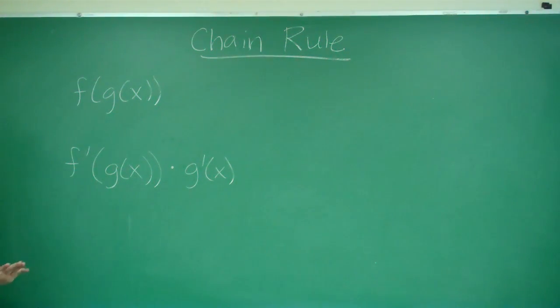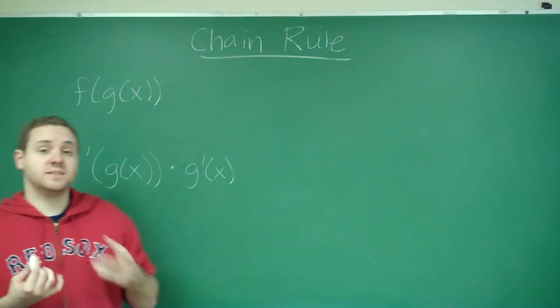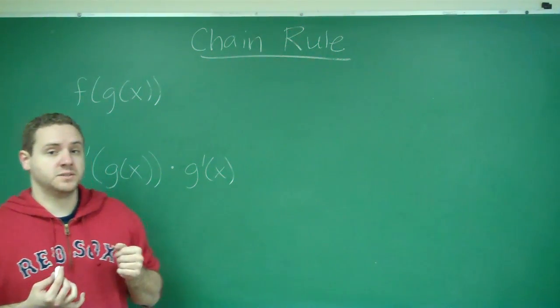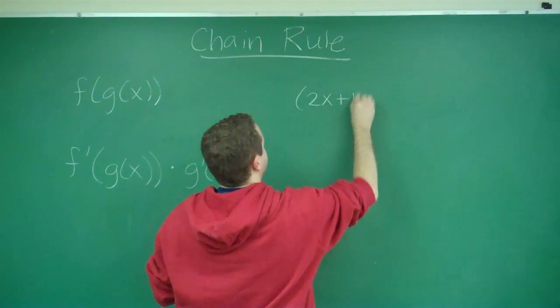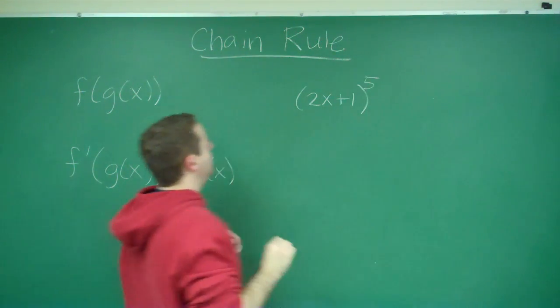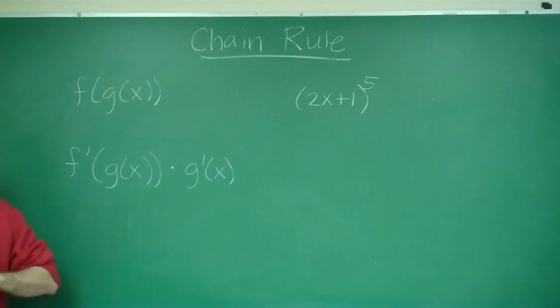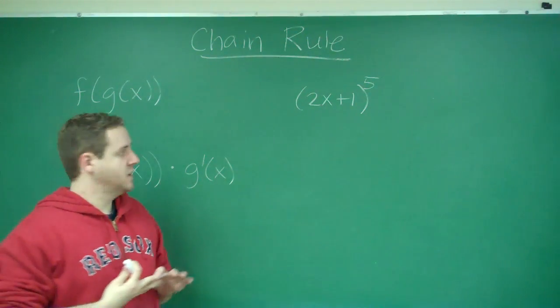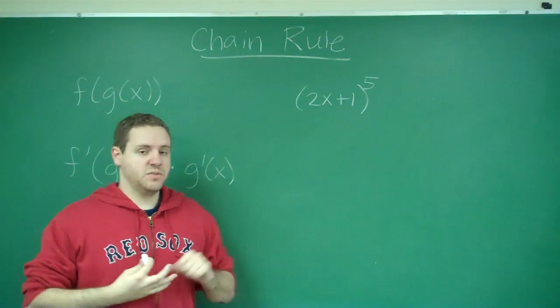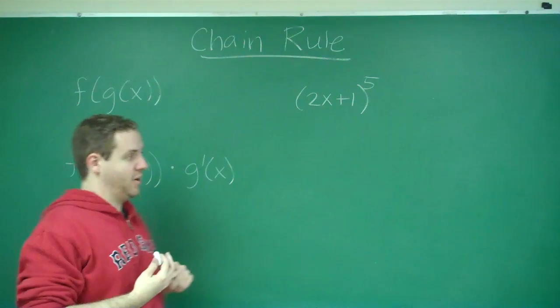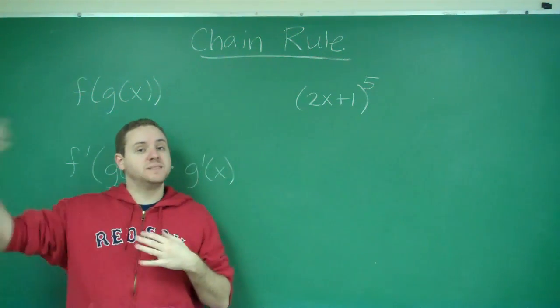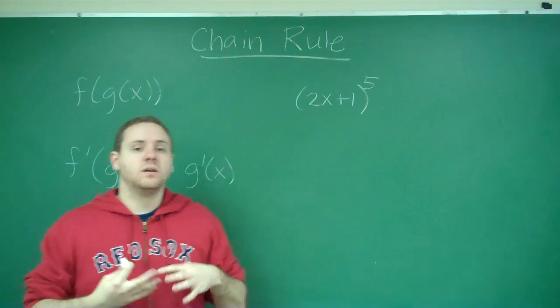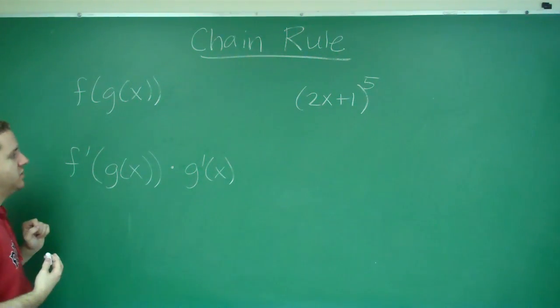Now let's look at an example of a function that can be considered a composition of functions. For example, if we had the function (2x+1) to the 5th power and we want to take the derivative of that function. Power rule states that our outer function, the raising to the 5th power, we're going to do that derivative like normal.